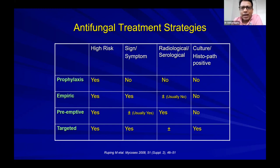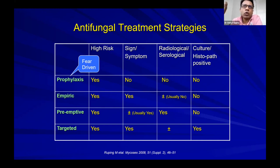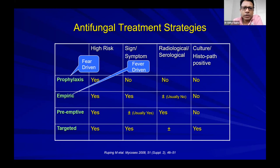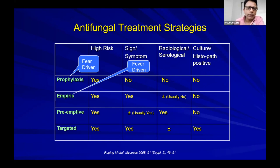The prophylactic paradigm is fear-driven — the only thing present is high risk, such as a patient going for aggressive AML chemotherapy. The empiric paradigm is fever-driven — the patient has high risk plus a sign or symptom like unexplained fever despite two antibiotics, with no radiological, serological, or culture evidence.